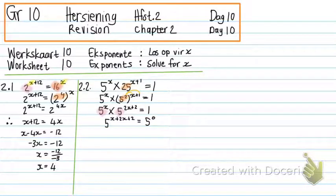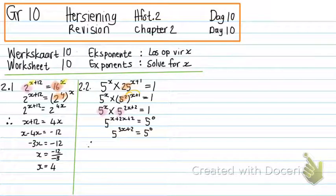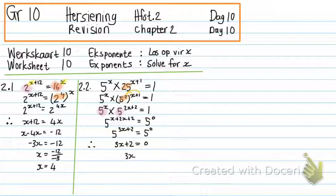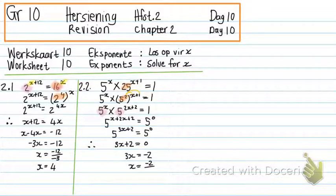Now the bases are the same, so I can get rid of the bases and just use the exponents. So X plus 2X plus 2 equals 0, giving 3X plus 2 equals 0. I take the 2 over: 3X equals negative 2. Dividing by 3 to get X alone, the answer is negative 2 over 3.